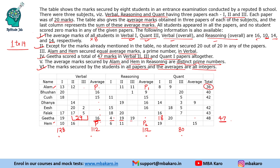Her marks in Reasoning are known: 4 plus 19 plus 19 is 42, average marks are 14. So 16 plus 14 is 30, and her total is 48. Her average marks in Quant should be 18. That means 18 plus 20 is 38, so she should get 16 marks in the remaining Quant paper.